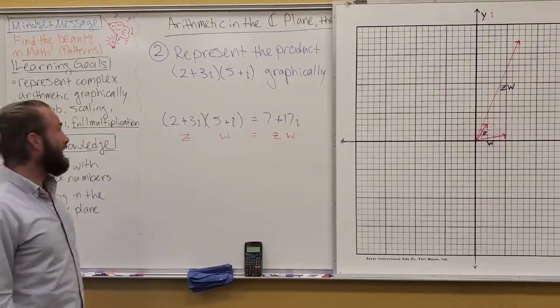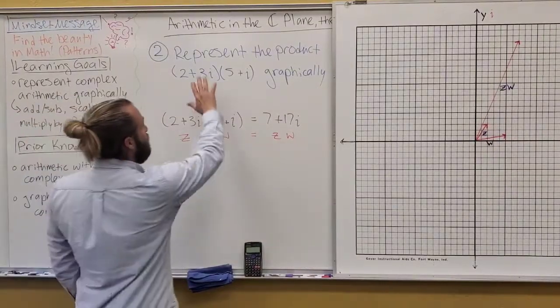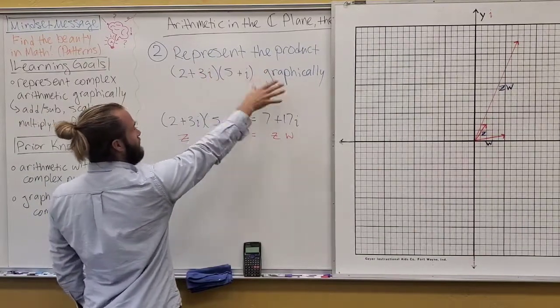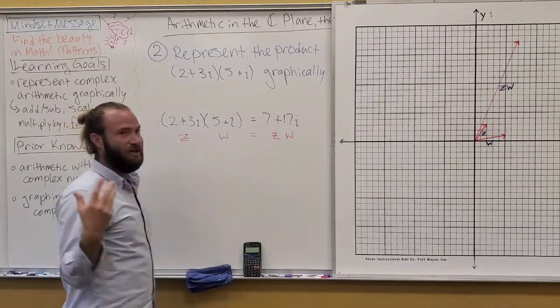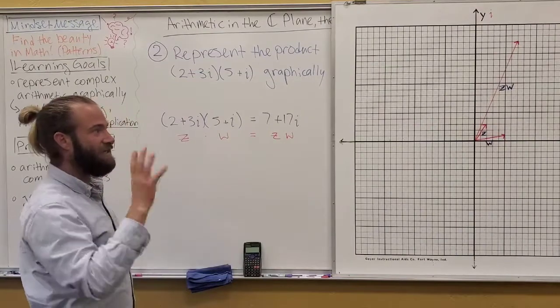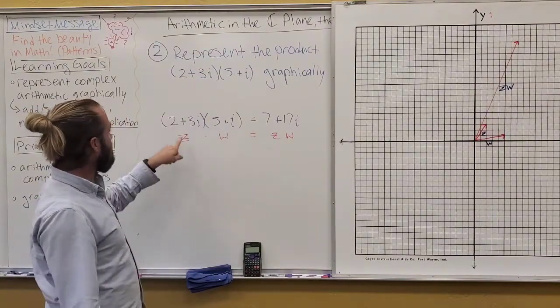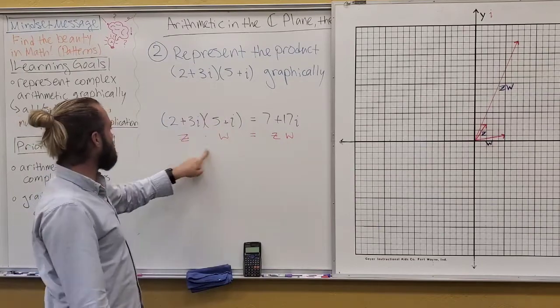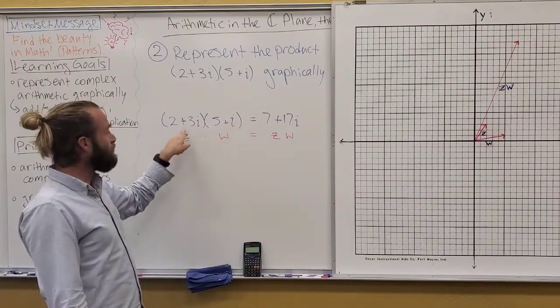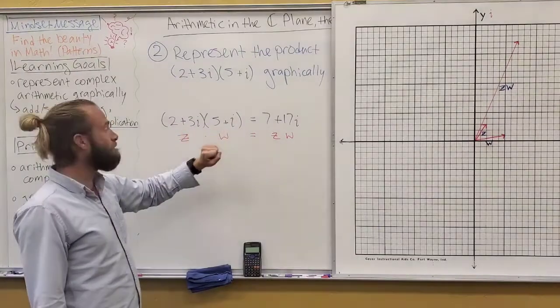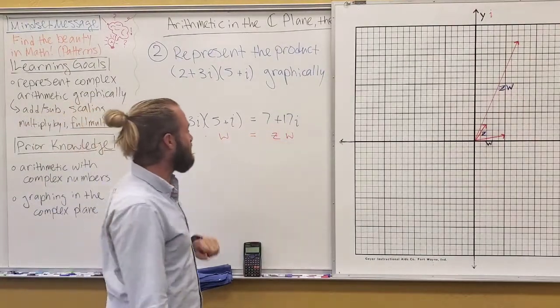Let's just dive in by using a direct example. Our goal here is to represent the product graphically, but we're actually going to look at that in a different way in a moment. For now, direct calculation. Let's suppose I call this Z and W, and if you did the multiplication of 2 plus 3i times 5 plus i, you'd get 7 plus 17i.